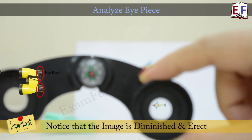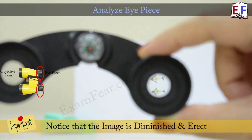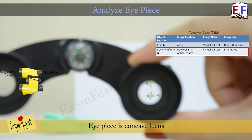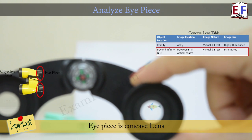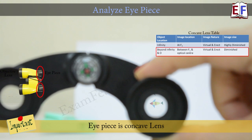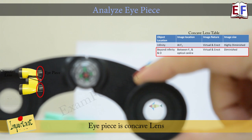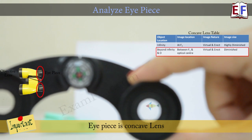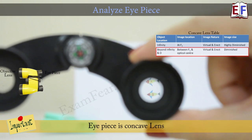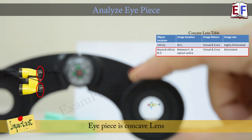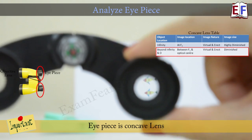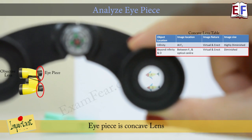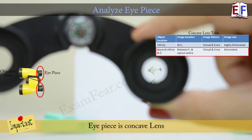Now let us try to compare this with image formation by concave lens, where irrespective of where the lens is, the image formed is always diminished and erect. So this shows that the eyepiece is a concave lens.